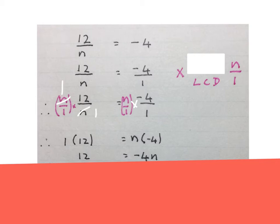Then we simplify the two sides. 1 times 12 is 12 and n times minus 4 is minus 4n. Now we can solve for n to get the n alone.